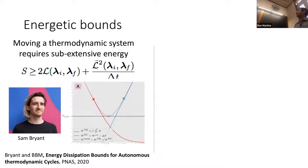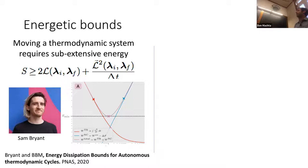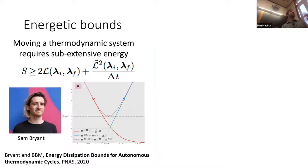We also spend a lot of time thinking about energetic bounds — work Sam has been leading. The claim is that if you have a system, say a Carnot engine, even if you drive it very slowly, there's a minimum energetic cost that you don't recover when you move the system in reverse. This is very different from the bounds people usually discuss, which you do recover if you run in reverse infinitely slowly.